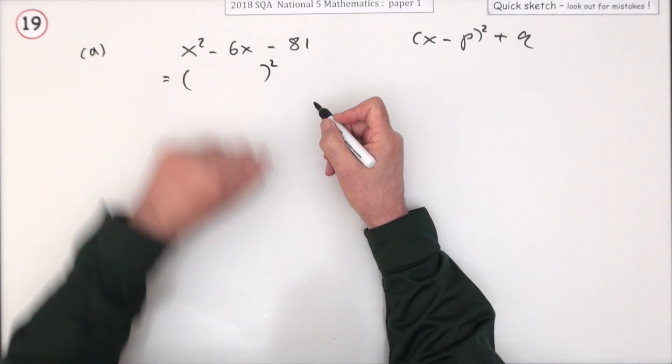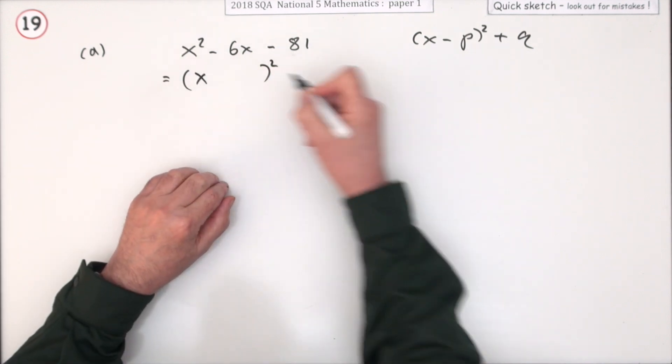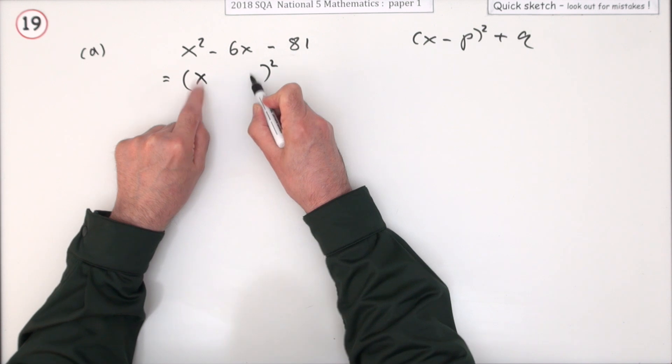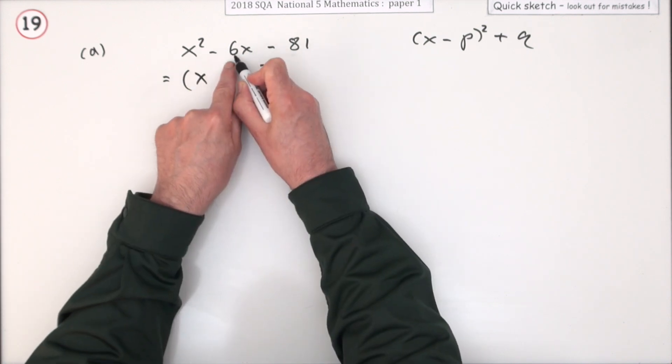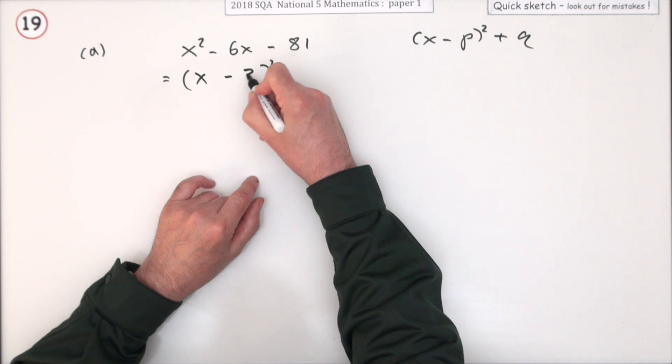What square could produce those? Well square the first produces x squared. So that must be an x. Square the last doesn't produce that. But twice the product produces this. Now that 6 is twice the number that should go here. So it must be minus 3.